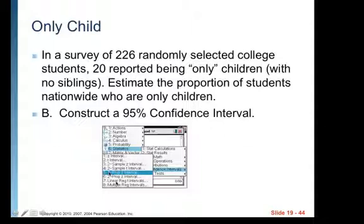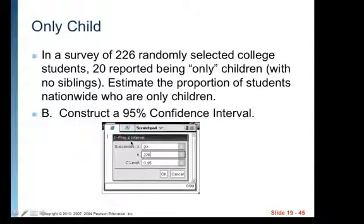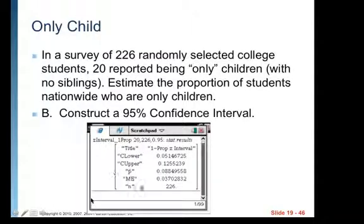You want to go to one proportion Z interval. All these others are set up for different things. The Z interval, T interval at the top, that's for means. It won't give you good menu items. You won't be able to input your information well if you choose the wrong one. So you want one proportion Z interval. When you choose that, it's going to ask for the number of successes. So there were 20 only children, and then it's going to ask you for N. That's your sample size, 226. And the default is 95% confidence, so you should be good to go there. And then you click OK. If you have a different level of confidence, just change it. And you'll be able to click OK.